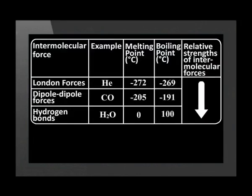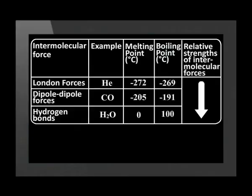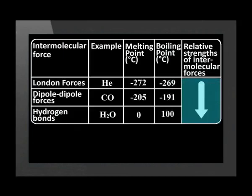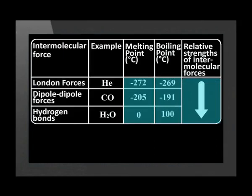This table illustrates some more examples of melting and boiling points of different substances and shows the relative strengths of different types of intermolecular forces. We know that London forces are the weakest of all intermolecular forces, then comes dipole-dipole forces, and then hydrogen bonds are the strongest. We can see from the examples given that as the strength of the intermolecular forces increases, so the melting points increase, and boiling points follow the same trend.